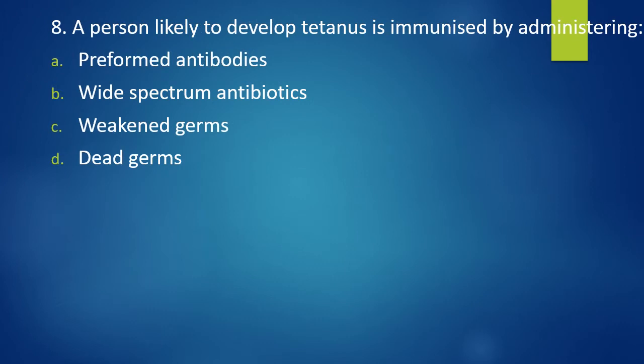Question 8. A person likely to develop tetanus is immunized by administering preformed antibody, wide spectrum antibodies, weakened germs or dead germs.